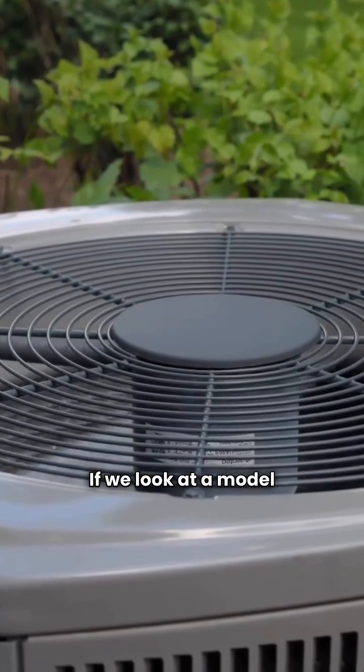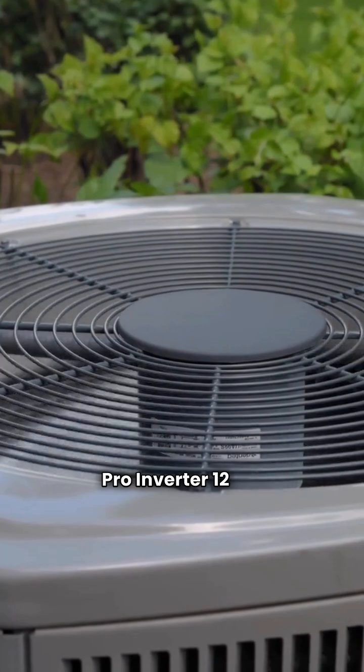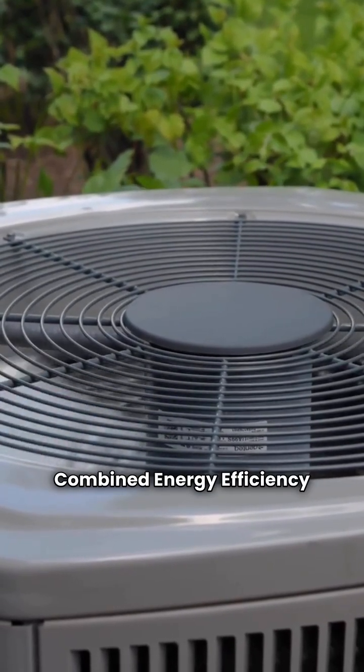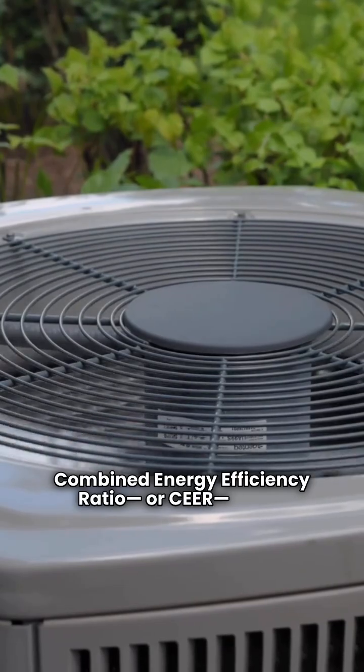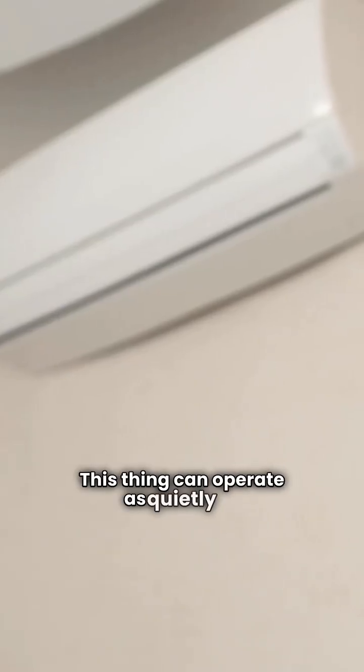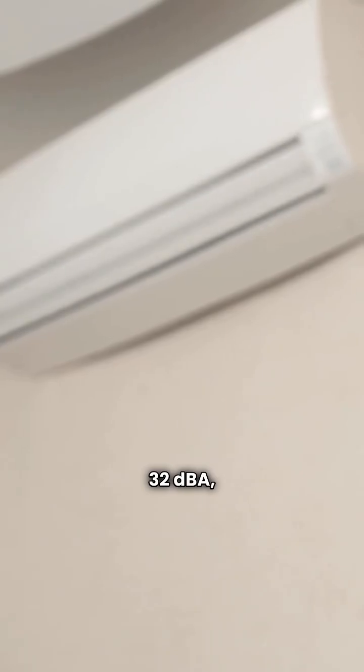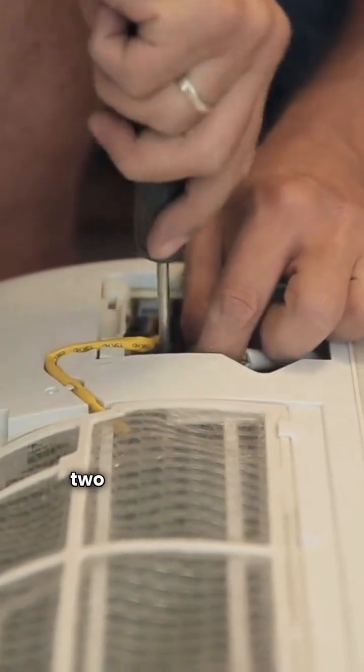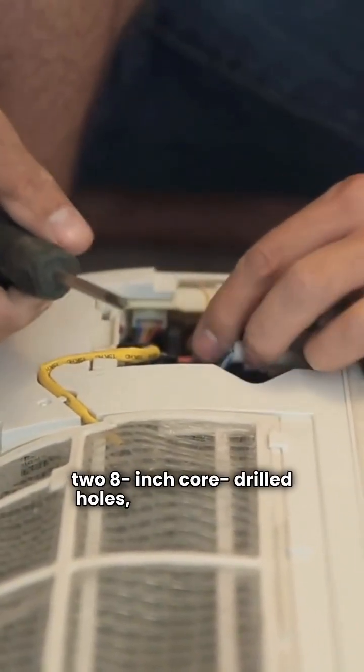If we look at a model like the Maestro Pro Inverter 12 HP, it clocks in with a combined energy efficiency ratio, or SEER, of 9.7, but the real selling point is the sound. This thing can operate as quietly as 32 dBA, which is just a whisper. Installation is simple. Two 8-inch core drilled holes, and you're done.